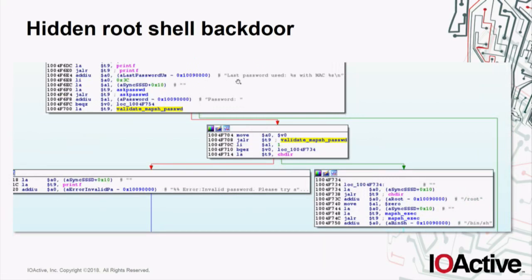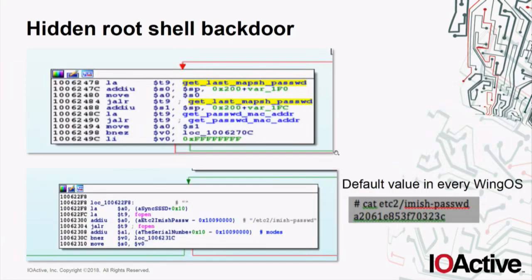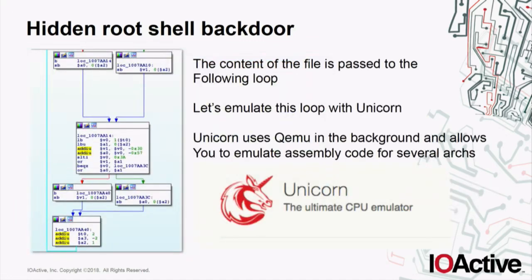Inside the validate_map_password function, it calls get_last_map_password, which opens the file /etc2/imis_password. The content of this file is a particular string, and this is the default value in every WiNG OS device. Then, with the content of the file, it executes instructions in a loop. To understand this, I emulated the code using Unicorn — an OSS framework using QEMU in the background that allows you to emulate several architectures. To emulate the code, you need prior reverse engineering work — for instance, knowing what register points to your input buffer with the file contents, and what register points to the buffer where the result of the operations will be.